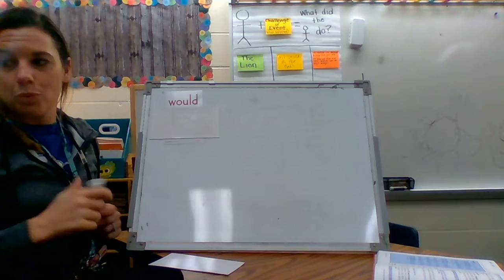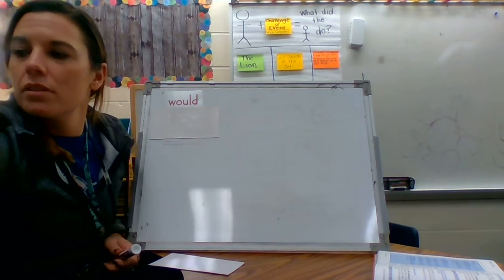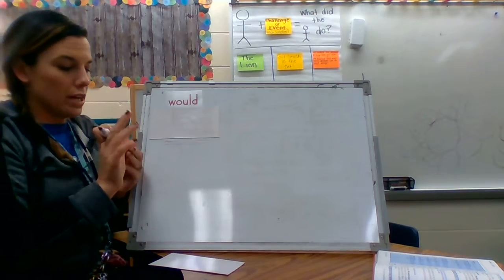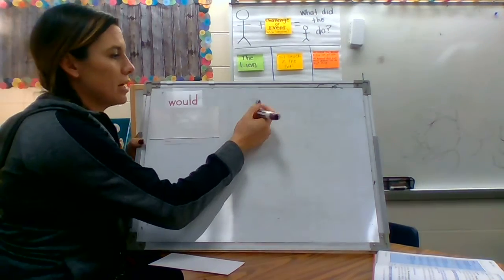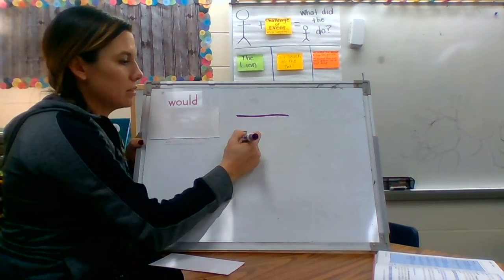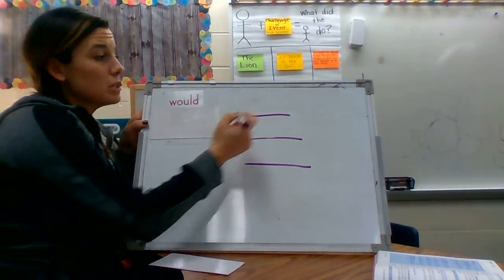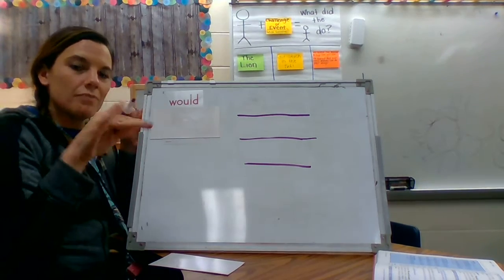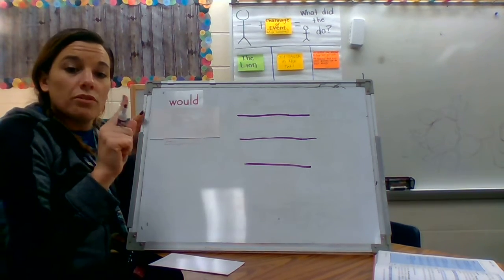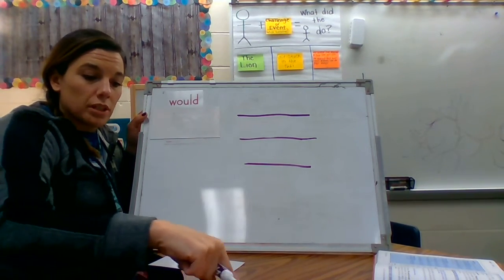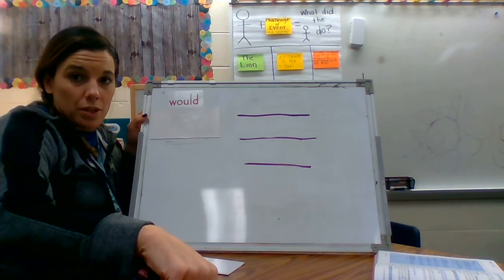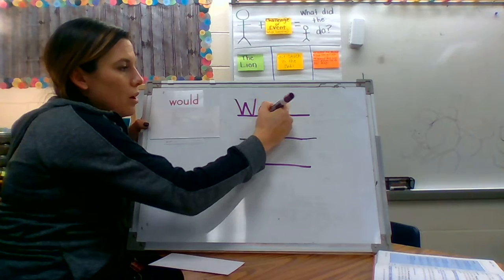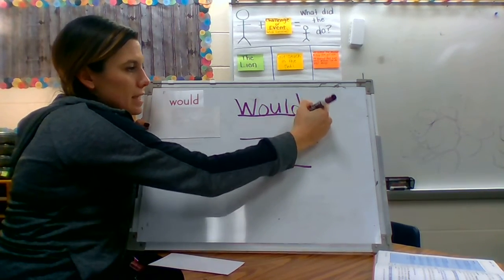I'm going to write the word three times. Can you guys help me spell it? Let me just write three lines. One, two, three. You guys spell the word for me at home as I write it. Actually, don't do that. You guys use your finger and pretend write the word. We'll all write it together, okay? Here we go. W-O-U-L-D.